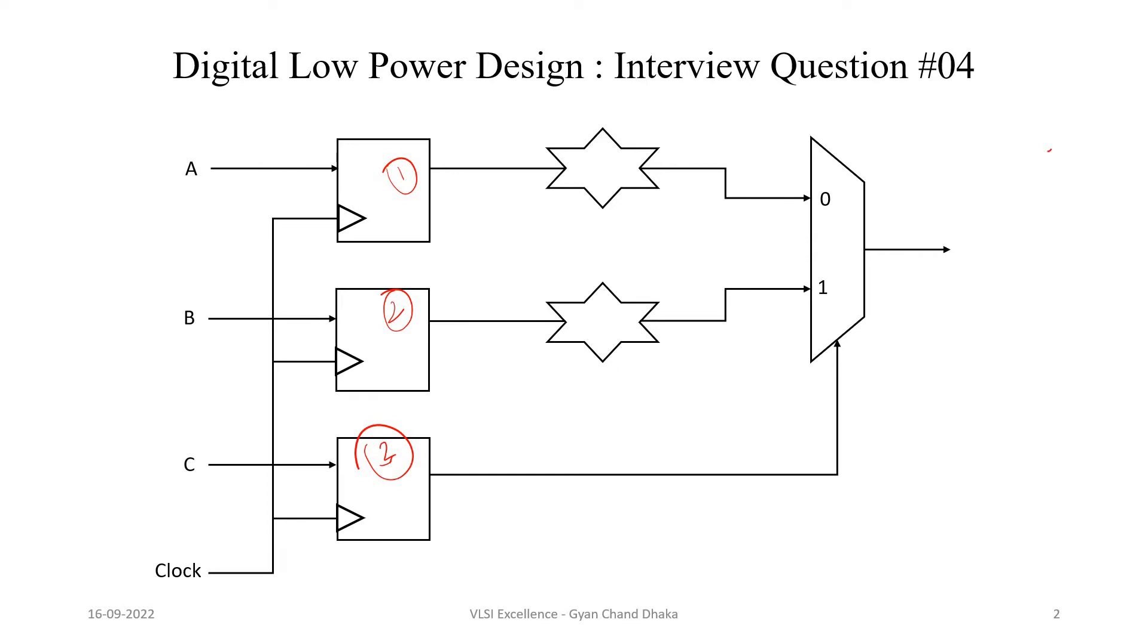So if we analyze the functionality of this circuit, whenever the flip-flop 3 output is 0, the output of flip-flop 1 will be selected by the multiplexer. And whenever the output of flip-flop 3 is 1, the output of flip-flop 2 will be selected by this multiplexer. That means the outputs of flip-flop 1 and flip-flop 2 are never going to be used at the same time in the design. So now let's see how we can optimize this circuit for power consumption.